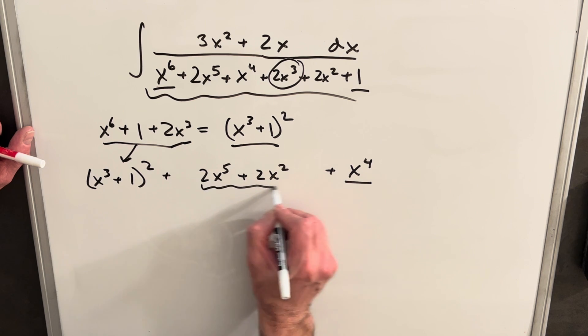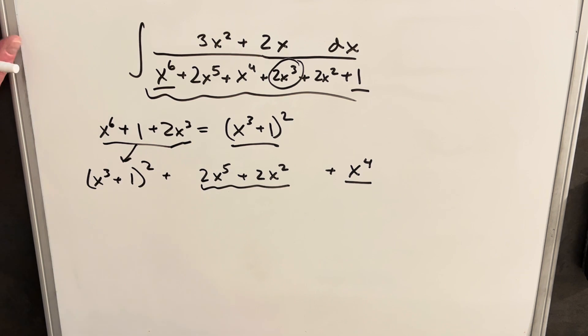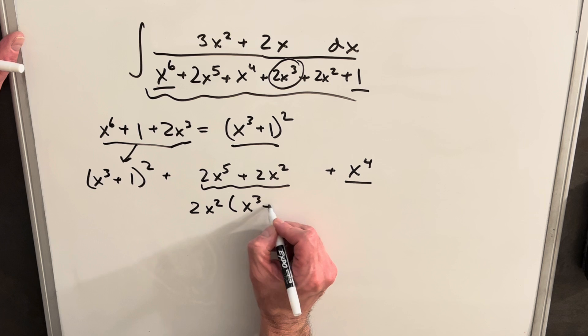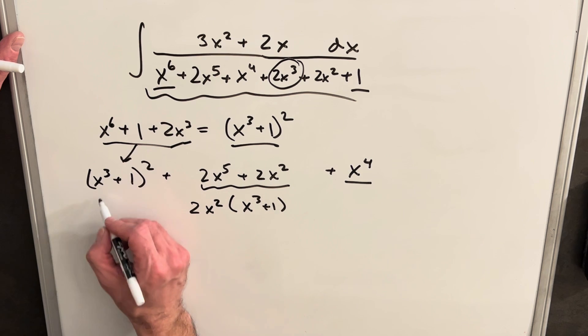we'll bring it over here, and I group these together because we've got the same coefficient, 2. And then notice I can factor a 2x squared out of this, and we get another x cubed plus 1, which is the same thing we have in our first term.